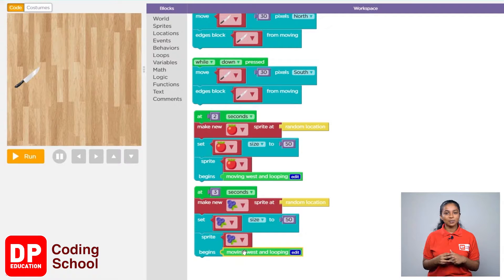Similarly, at 4 seconds, we need to see a sprite of an orange and it should move towards the west. So, let's work on this.